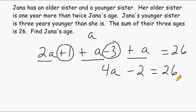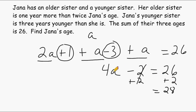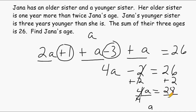Now we have one variable, which allows us to isolate it and solve. The first step is to add two to both sides so it cancels out with the minus two, giving us twenty-eight on the right-hand side. On the left-hand side we just have 4a remaining. 4a means four times a, and to get just 1a we divide the coefficient by itself — dividing anything by itself equals one. So on the left-hand side that leaves just 1a, and on the right-hand side we divide twenty-eight by four, which is seven. Jana's age is seven years.